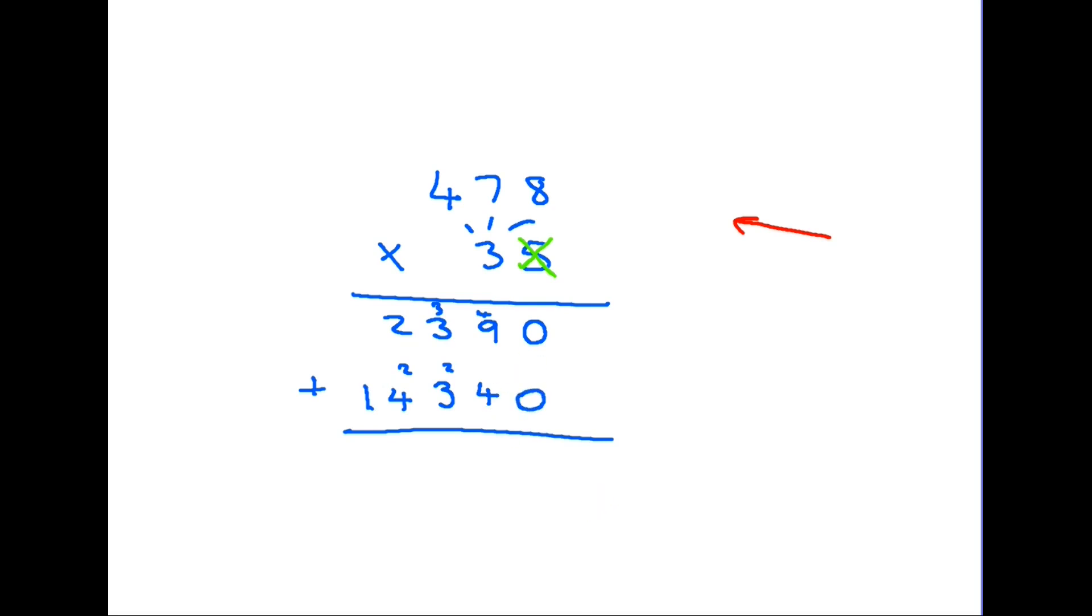We are then looking at two rows. This top row is 478 which we multiplied by 5. The bottom row is the 478 that we multiplied by the 30. So if we add them together, we will get our total. Now we have an addition: 0 plus 0 is 0.